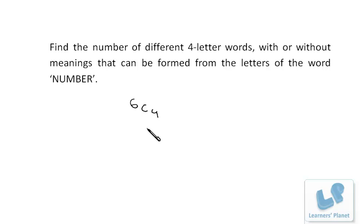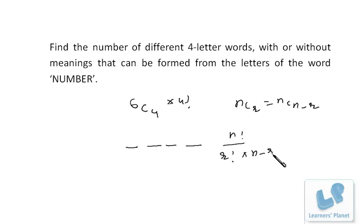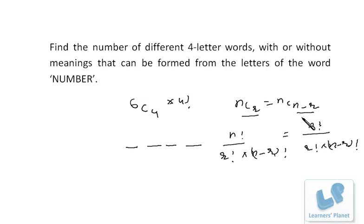Now, to make different words, these four selected alphabets can be arranged in various ways. Four alphabets can be arranged in four factorial ways. So it is selection, then after selection we make the arrangement. Now, nCr equals nC(n−r) because n factorial divided by r factorial into (n−r) factorial is the same as n factorial divided by (n−r) factorial into r factorial. So 6C4 is the same as 6C2.